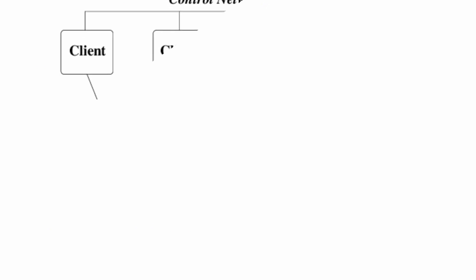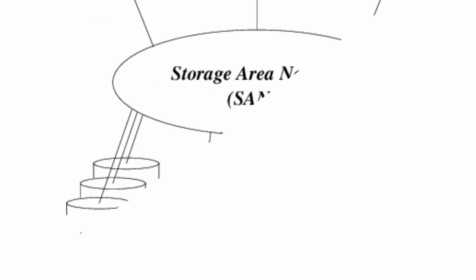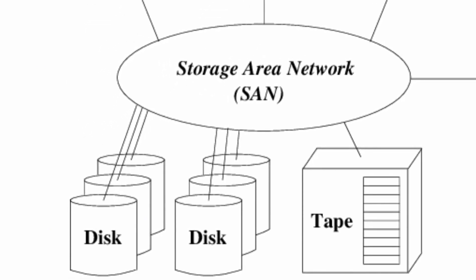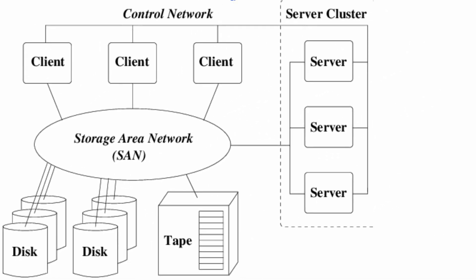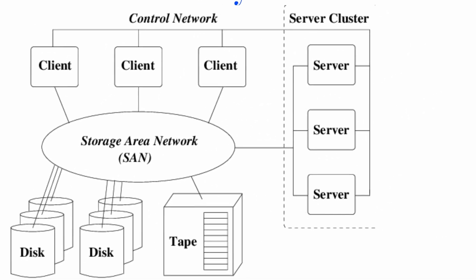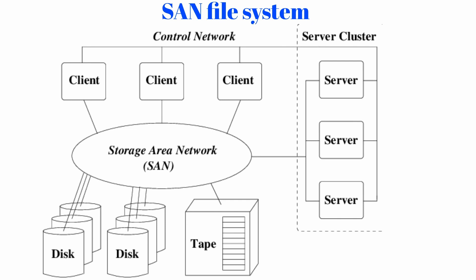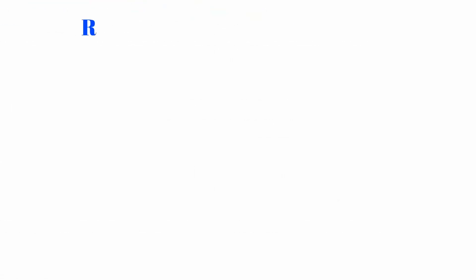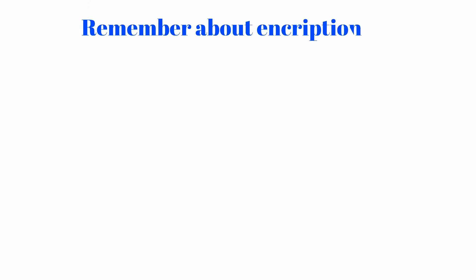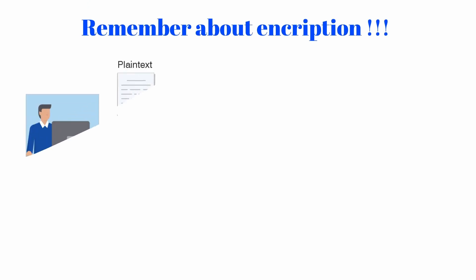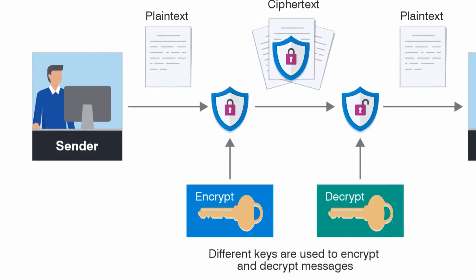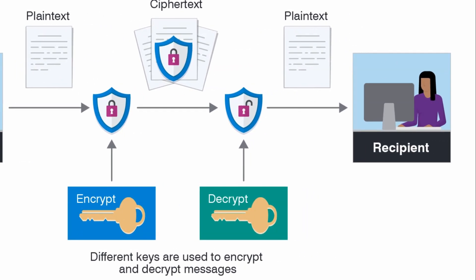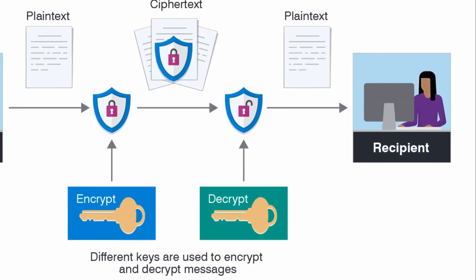We find it best to explain our ideas using the security mechanisms for an out-of-band virtualized SAN file system. Various capability-based mechanisms have been proposed to provide secure access for such file systems. All proposed solutions require per-request encryption and decryption at the storage controllers in order to verify whether the client is authorized to access the requested block.